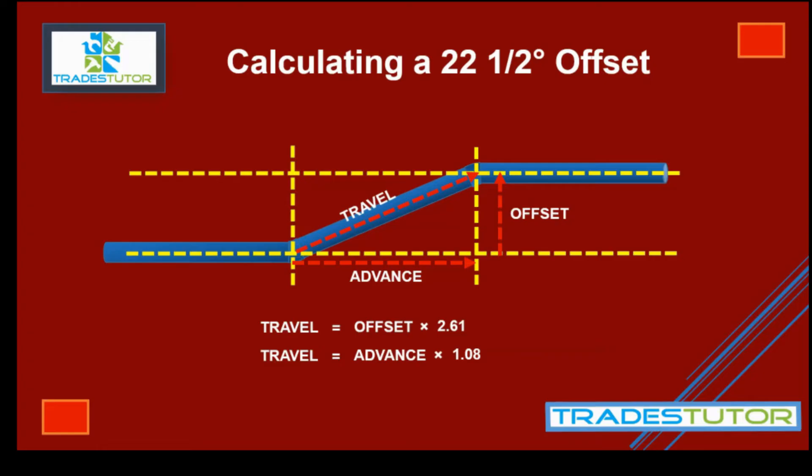And same thing for the advance. It's 1.08 times bigger than the advance. So that's how the whole relationship.